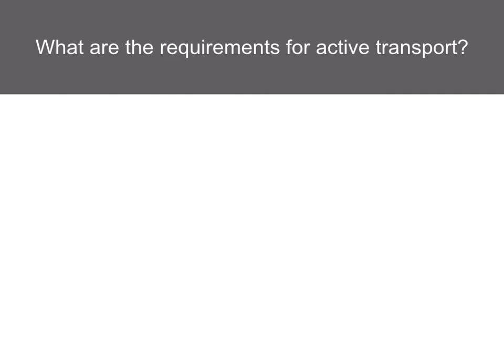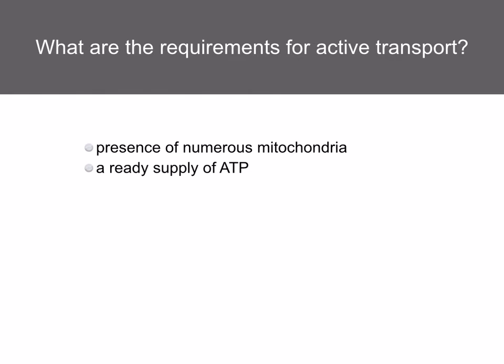What are the requirements for active transport? Certain conditions are necessary for cells to carry out active transport. These include any factor that affects the respiratory rate, such as the presence of numerous mitochondria, a steady supply of ATP, and a high respiratory rate.